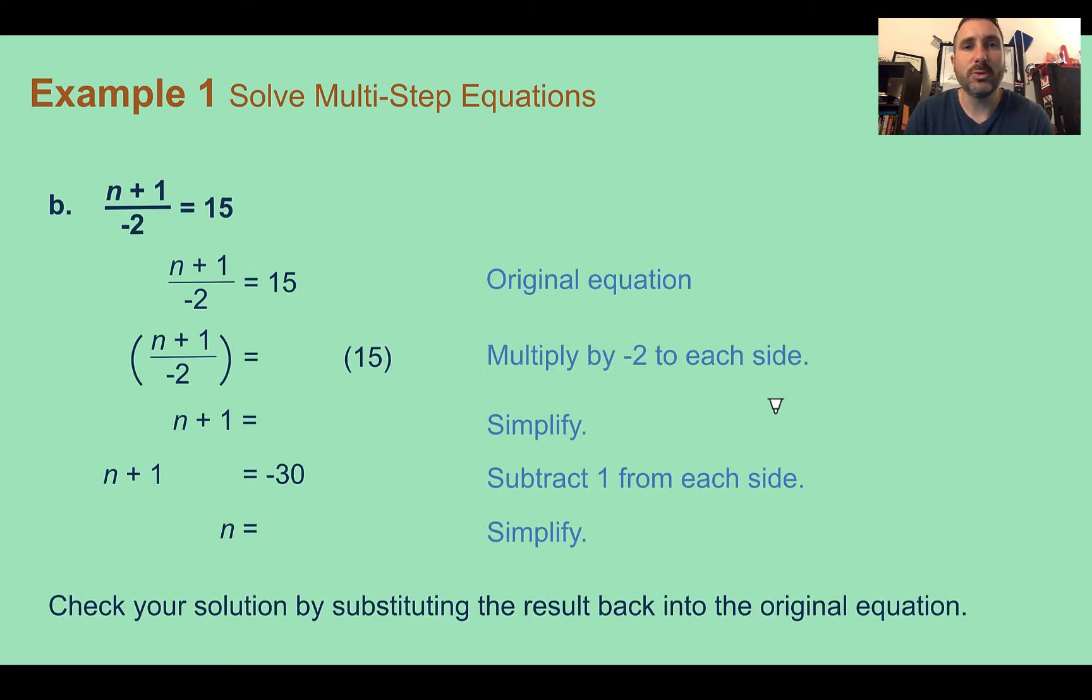Part B. N plus 1, all divided by negative 2, equals 15. Again, I'm going to look within the problem and think about what operations I see, so I know what I need to undo. I see a plus sign here, so I'm thinking somewhere I've got to subtract. And the fraction bar is division, so somewhere I'm going to need to multiply.